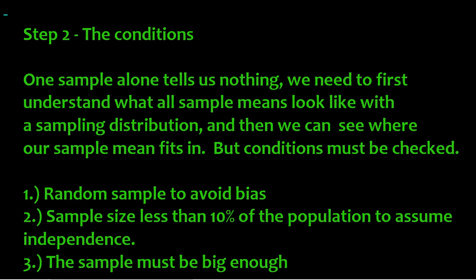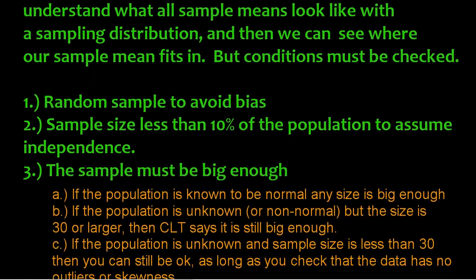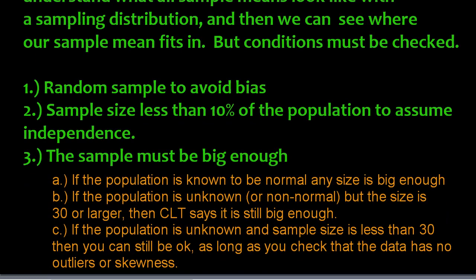And the third one is that you have to be big enough. Now, with proportions, big enough is when you have 10 or more successes, 10 or more failures. What does it take to be big enough with means? Well, there's actually three potential things that can happen here. You don't pick all three of these. You only got to pick one of them based on your problem. First, A, if the population is known to be normal, honestly, any sample size is big enough to build your sampling distribution just the way you want. However, if the population is unknown or like skewed left or skewed right, something non-normal, then we do need to be 30 or larger.